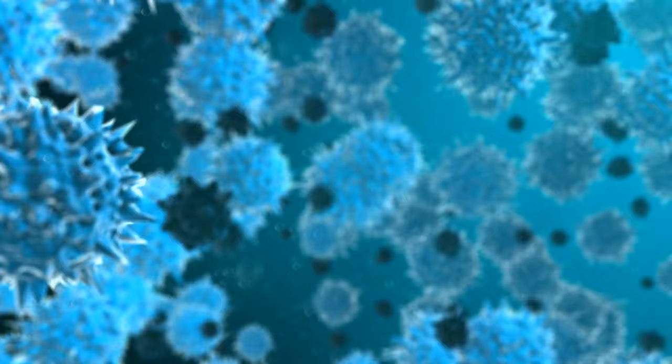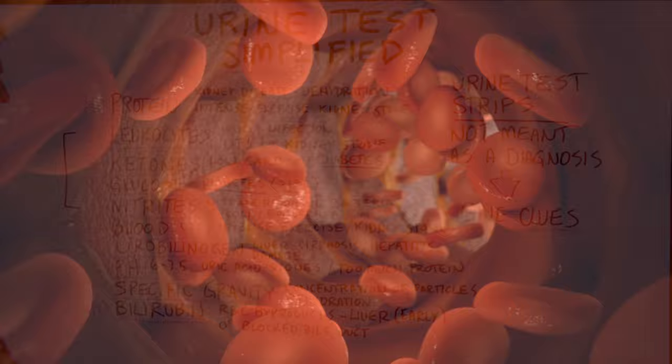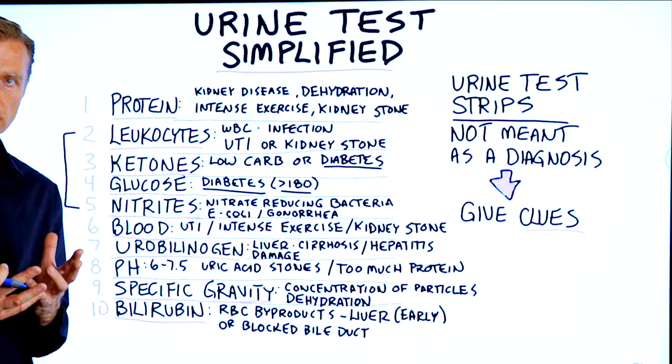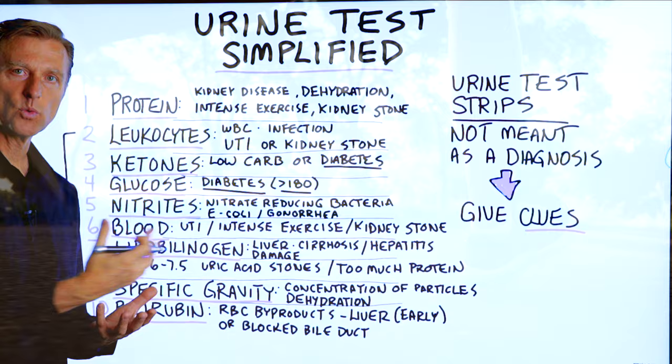What about blood? That could be a UTI — a urinary tract infection. It could also be from intense exercise, because the kidney is a filter, like an oil filter. If you're exercising hard, you're pushing a lot of blood through this filter, and too much pressure could squeeze out some red blood cells that show up as blood. It could also be a kidney stone.